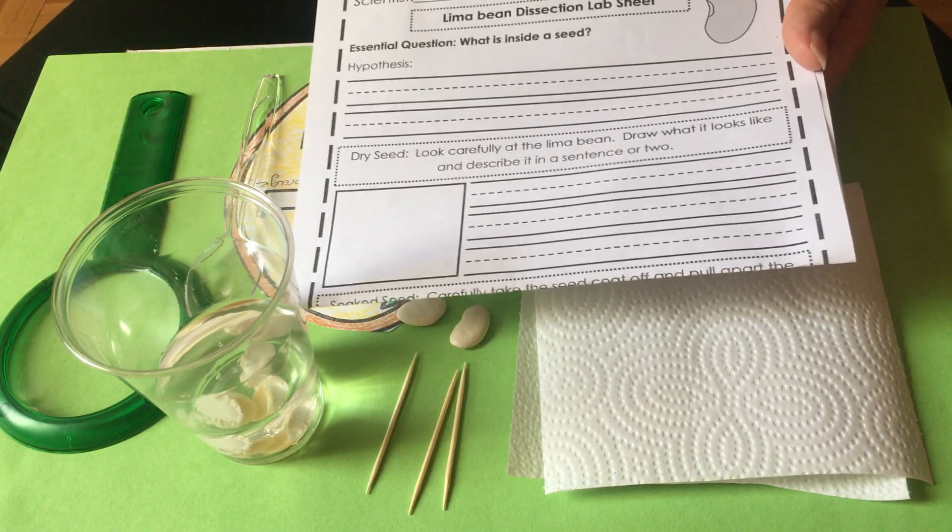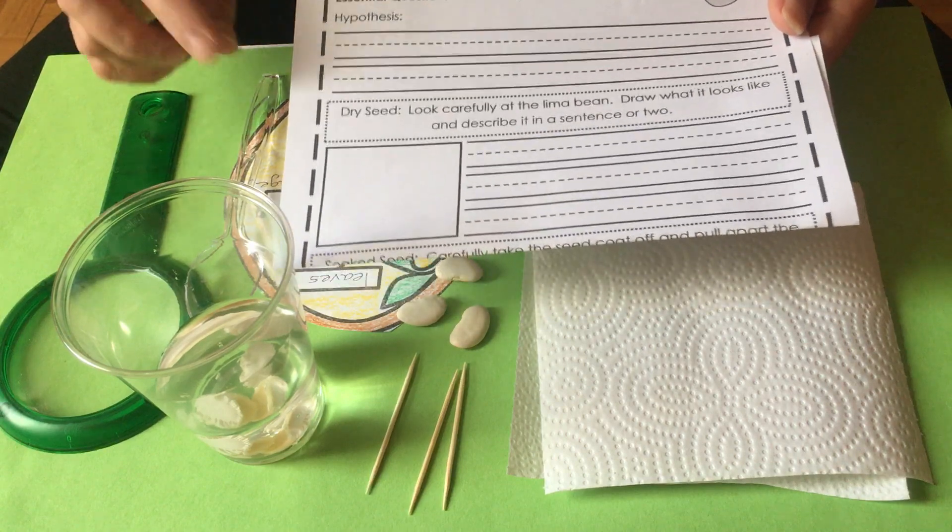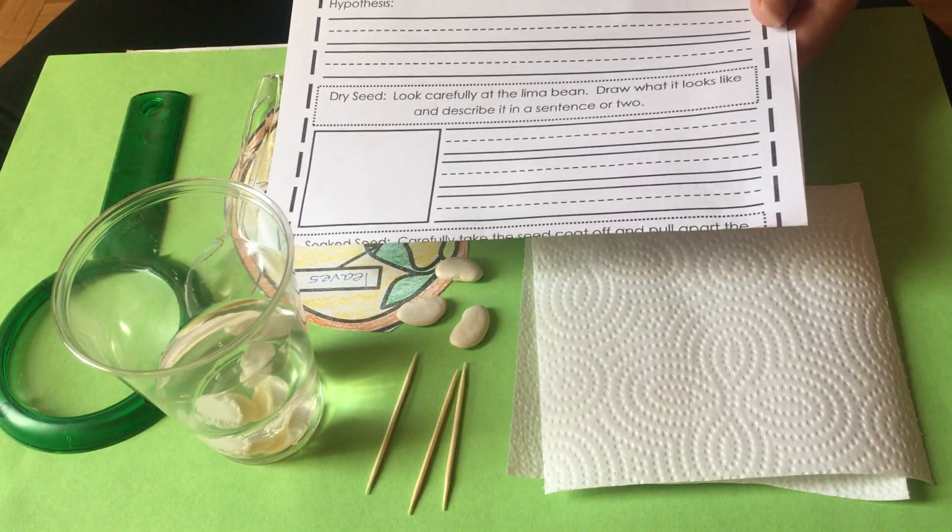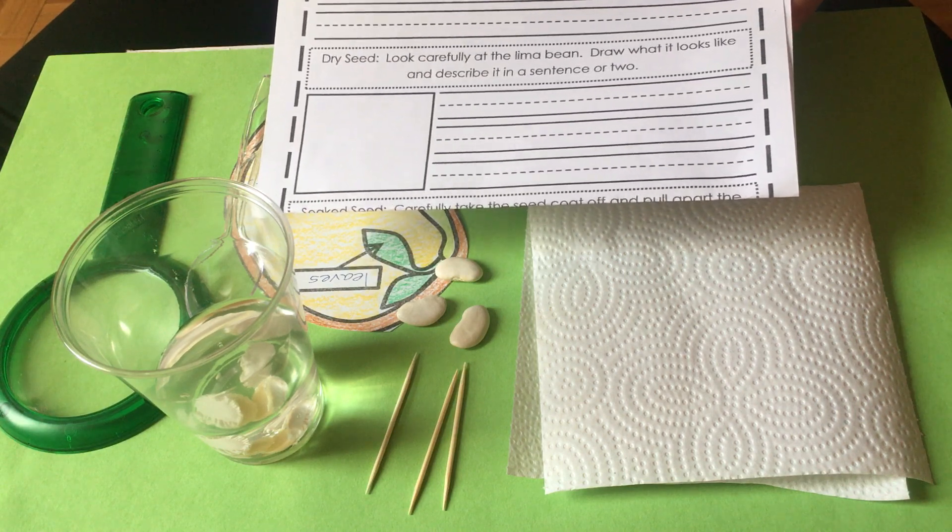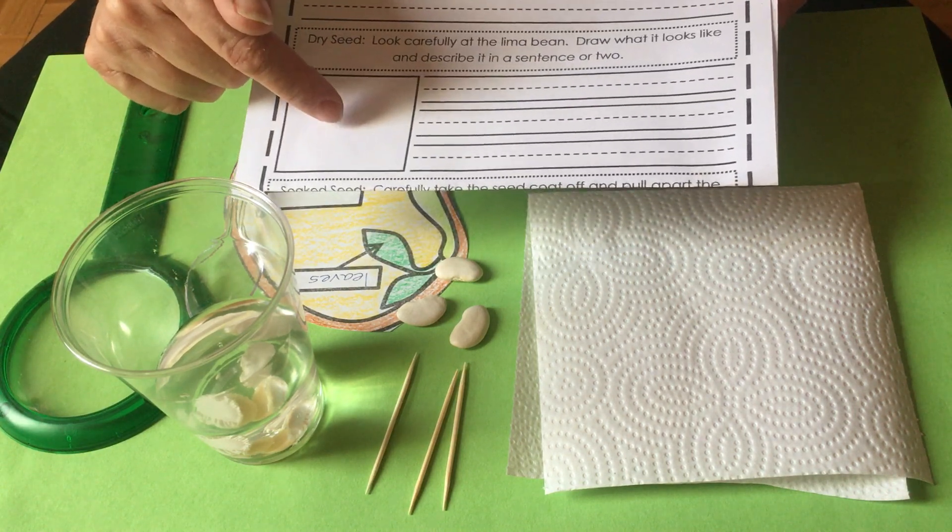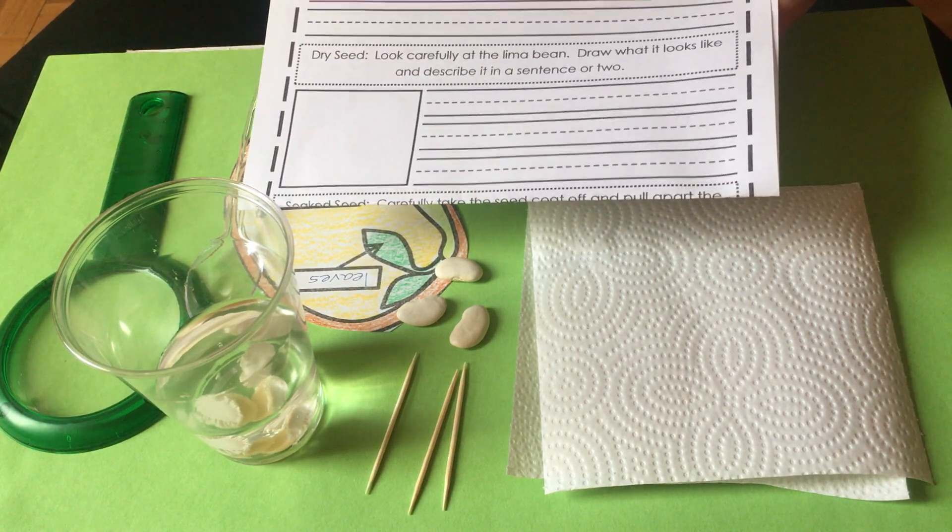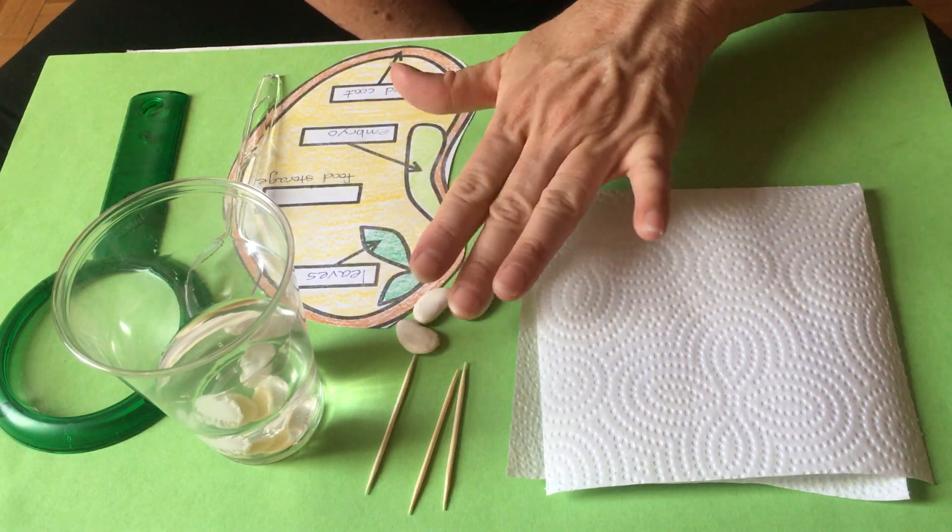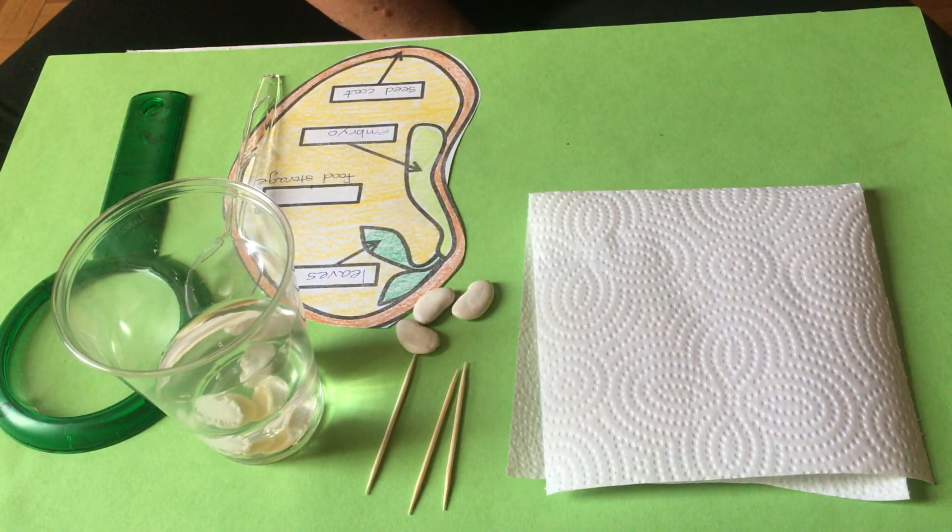The next section is 'dry seed'. It says look carefully at the lima bean, draw what it looks like in the square, and describe it in a sentence or two. What does a dry lima bean seed look like? Those are the two parts of your lab sheet.